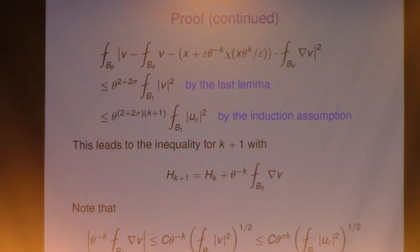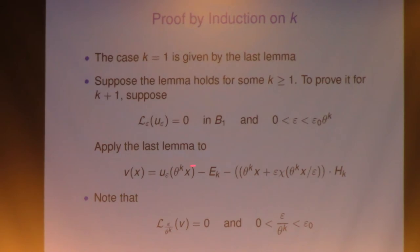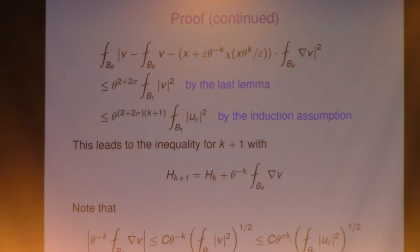On the second step, you have to change back from v, theta, and the change of variable. You have to take the average over B1. The average of v squared — you look at what v is and integrate over B1. This step is simply the induction argument. This one is not by the first lemma, but by the induction assumption that the lemma is true for integer k.